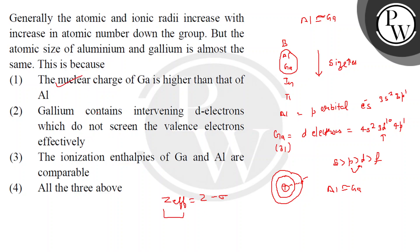This is the reason. The reason is that inner electrons which do not screen the valence electrons effectively, because they have less shielding power. It's intervening D electrons.